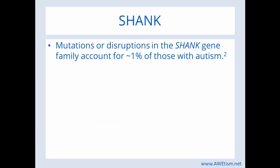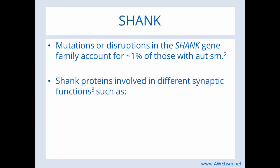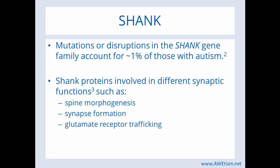Schenck. Let's get involved a little bit in the Schenck gene. Mutations or disruptions in the Schenck gene family account for about 1% of those with autism. Schenck proteins are involved in different synaptic functions, such as spine morphogenesis, synapse formation, glutamate receptor trafficking, and activity-dependent neuronal signaling.